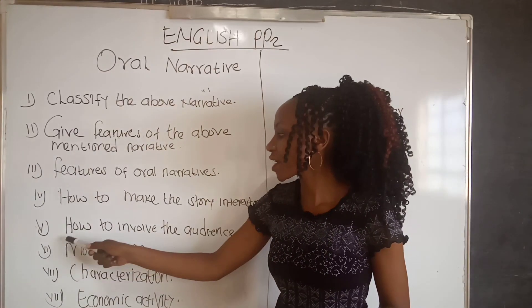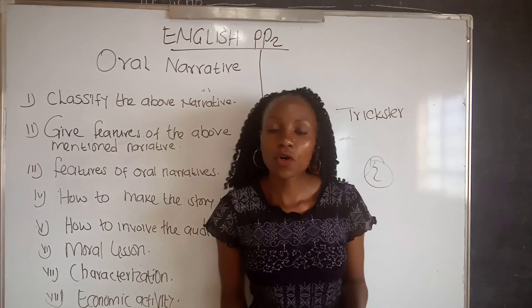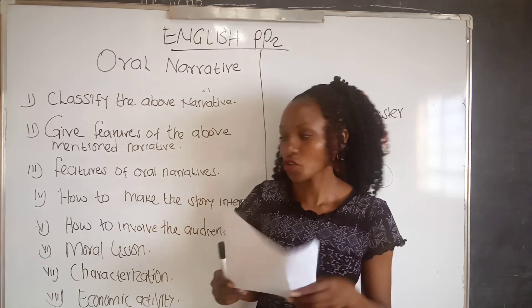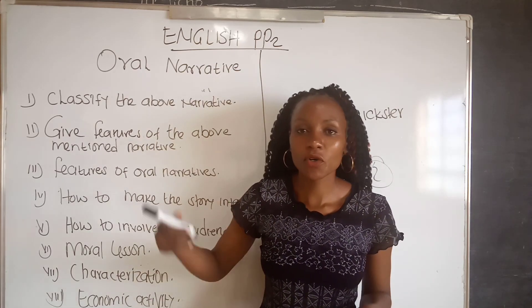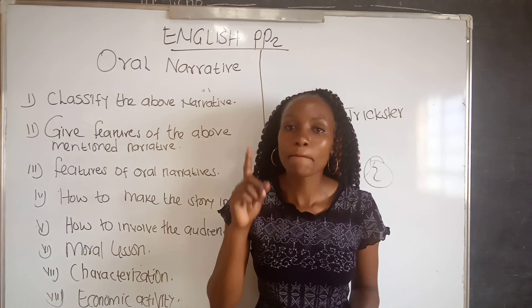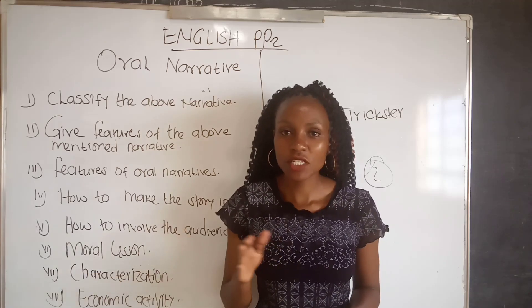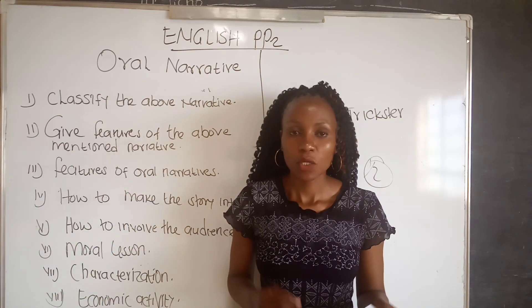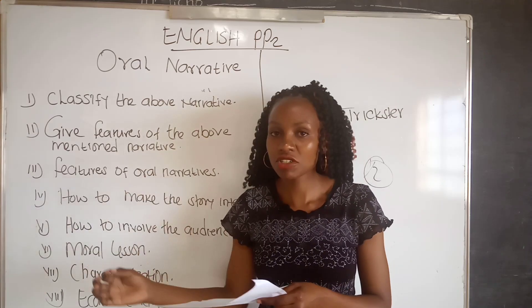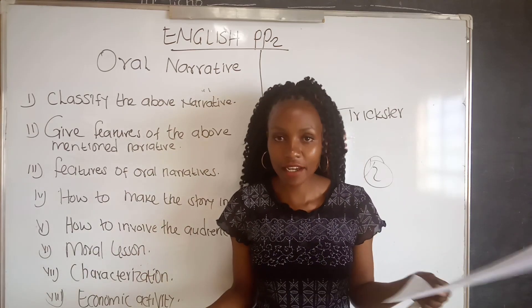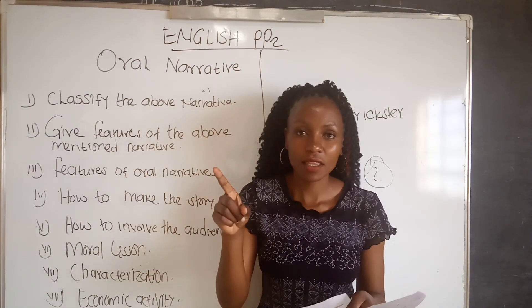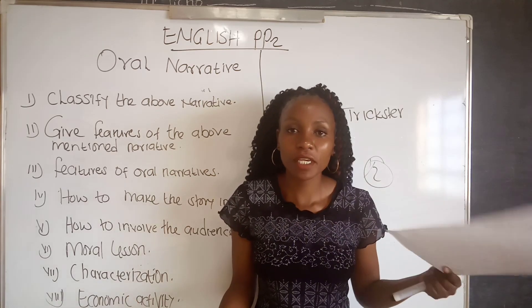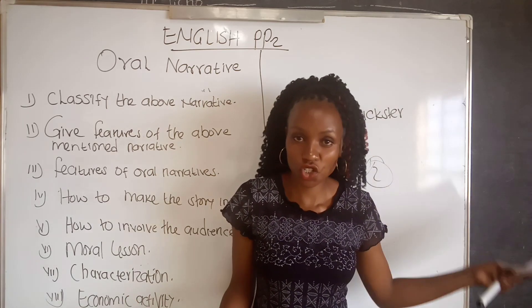You also have the question on the moral lesson. Take note: when giving the moral lesson, it must be in a positive form, not a negative form. For example, saying 'we should not be foolish like the hyena' is wrong. Instead, you should say 'we should be wise so as not to be cheated.'